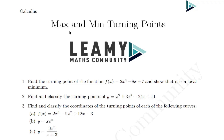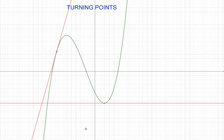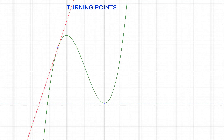Now we're going to look at maximum and minimum turning points. If we take this cubic function for example, we already talked about the derivative. So let's say I take this point — this red line here — it's the slope of the tangent at that point, and as we move along that point at different positions, the slope of the tangent is going to change.